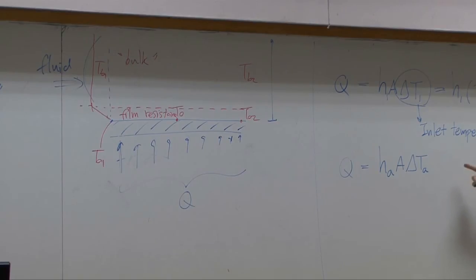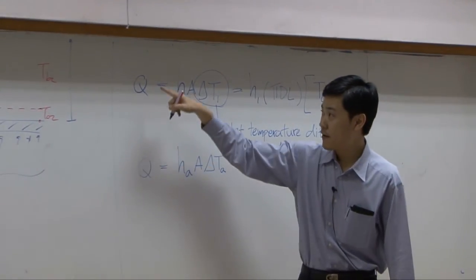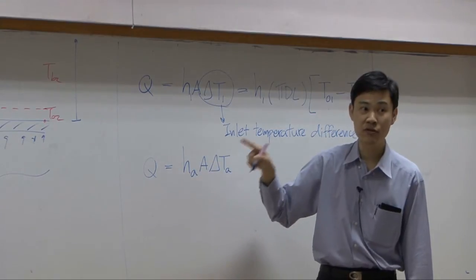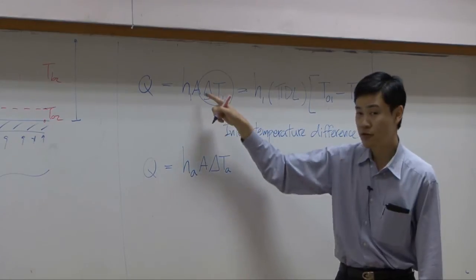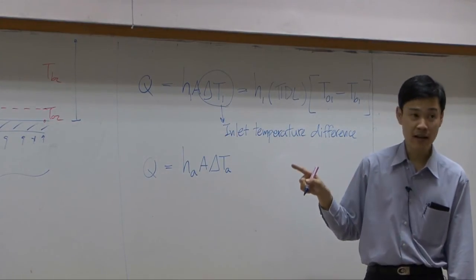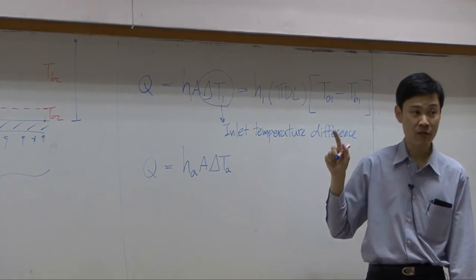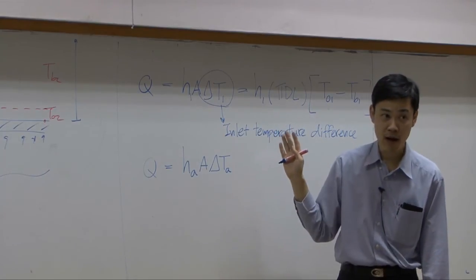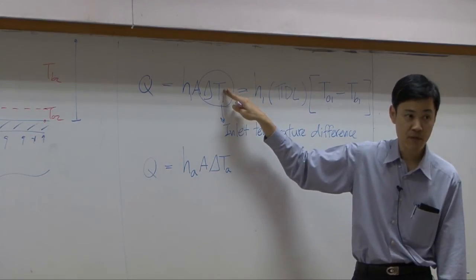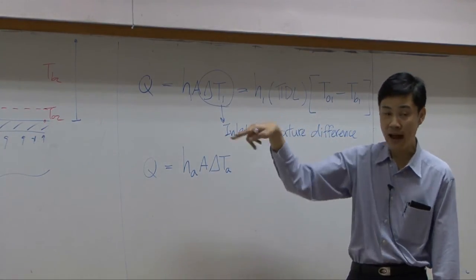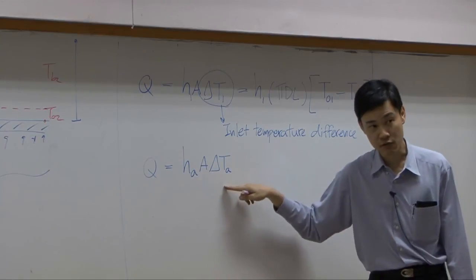The second one would be improved just a little. In this one, again, Q here, the total amount of energy transfer from the first equation or the second equation supposed to be the same number. The area is supposed to be the same number as well. The only difference would be the temperature, the driving force here. If you calculate driving force for overall heat transfer based on inlet temperature difference, you use this equation. If you calculate temperature difference for our system here based on both inlet and outlet temperature difference, then we can start using this one.